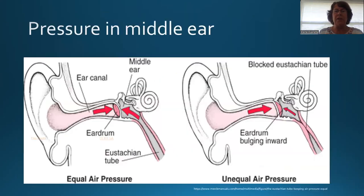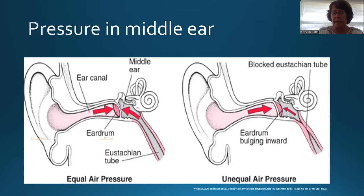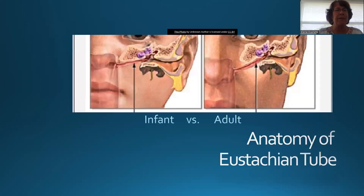Our focus today is on the middle ear and the eardrum. The middle ear is an air-filled space that is sealed behind the tympanic membrane. It's connected to the back of the throat through the eustachian tube. This eustachian tube allows for changes in pressure in the middle ear, so the middle ear pressure is supposed to be the same as the outer ear pressure. When that pressure increases or decreases, it can cause pain.